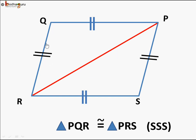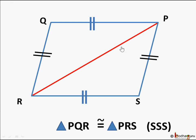This parallelogram is divided into two triangles PQR and PRS, and they are both congruent using the SSS (side-side-side) rule. This side is equal to this side of the other triangle, this side is equal to this side, and this side is common. So triangle PQR is congruent to triangle PRS using the side-side-side rule.